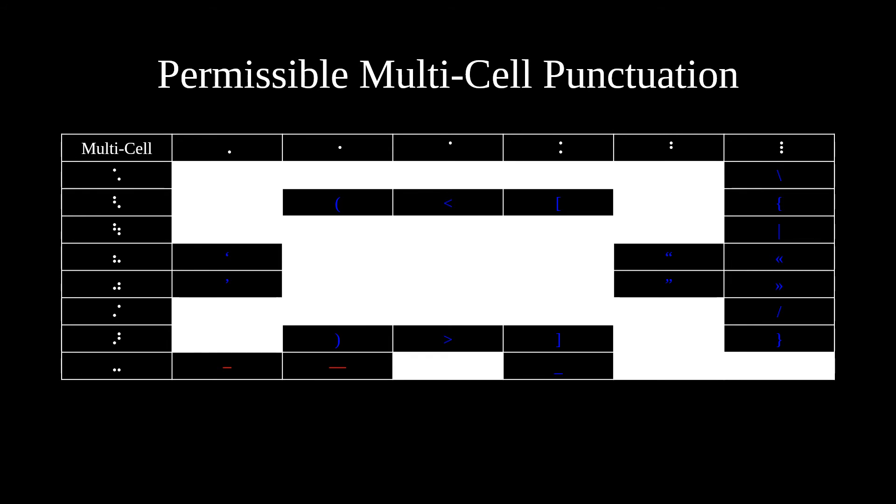There are other punctuation marks in this table as well, including the backslash, which consists of the 4-5-6 cell followed by the C-H cell, of which the latter is the fraction bar in numeric mode.